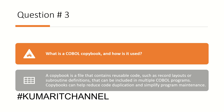Question number three: what is a COBOL copybook and how is it used? A copybook is a file that contains reusable code, such as record layouts or subroutine definitions, that can be included in multiple COBOL programs. Copybooks help reduce code duplication and simplify program maintenance. For example, a copybook could be used to define the layout of an inventory file used by multiple programs, ensuring consistency and simplifying maintenance of the inventory data.